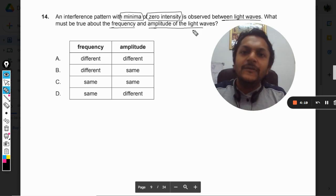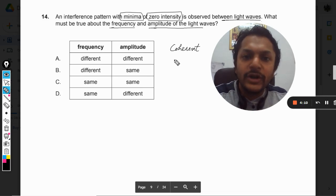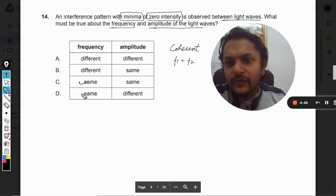If there is a difference of the frequency, the interference does not happen. So there is a condition that these light sources must be coherent, so frequency one should be equal to frequency two. So we are sure about the frequency.